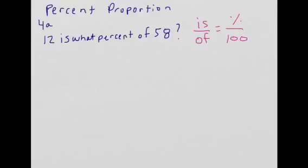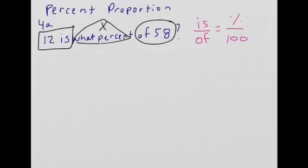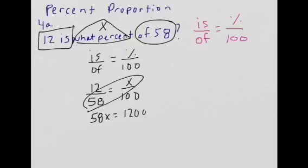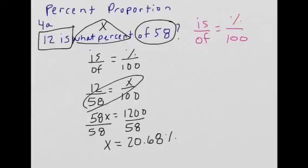Percent proportion. The formula is: is over of equals percent over 100. My percent I don't know, so that's x. My total (of) is 58, and my part (is) is 12. So: 12 over 58 equals x over 100. Butterfly: 58x equals 1,200. Divide by 58 on both sides, and x equals 20.68%, which could also round to 20.69%.